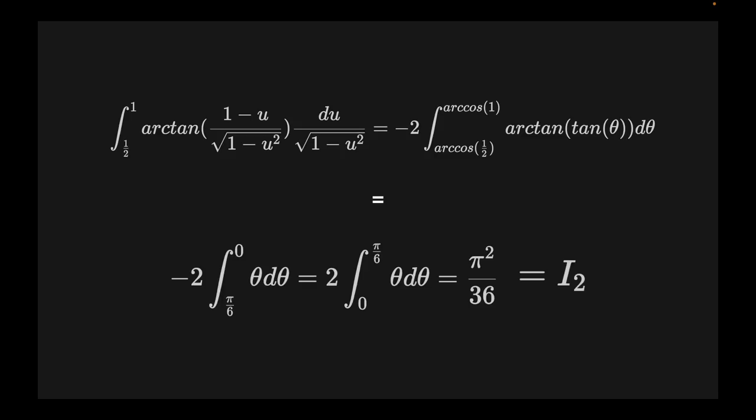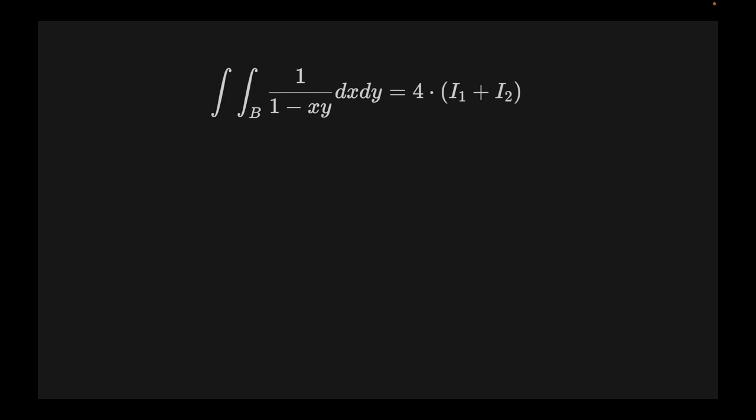Now we add everything together to get the final solution. We compute 4 times the sum of I1 and I2, which is 4 times (π²/72 + π²/36), and the result is pi squared over 6 — proving the Basel problem.